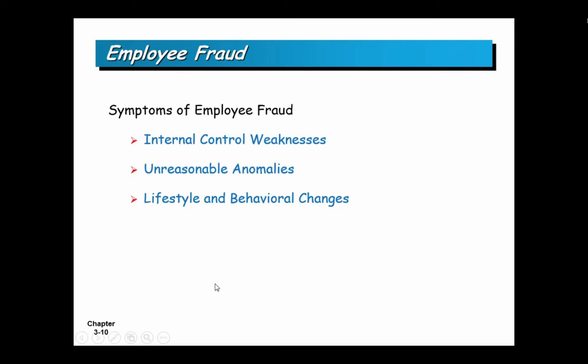Symptoms of employee fraud include bad internal controls — not-for-profits tend to have lesser controls because donors don't want money going into control systems. Banks try to find employee fraud by requiring two-week vacations, so if things are different while a teller is away, that signals possible fraud. A lifestyle or behavioral change — like a low-level clerk coming in with pictures of their new yacht — might also mean something.